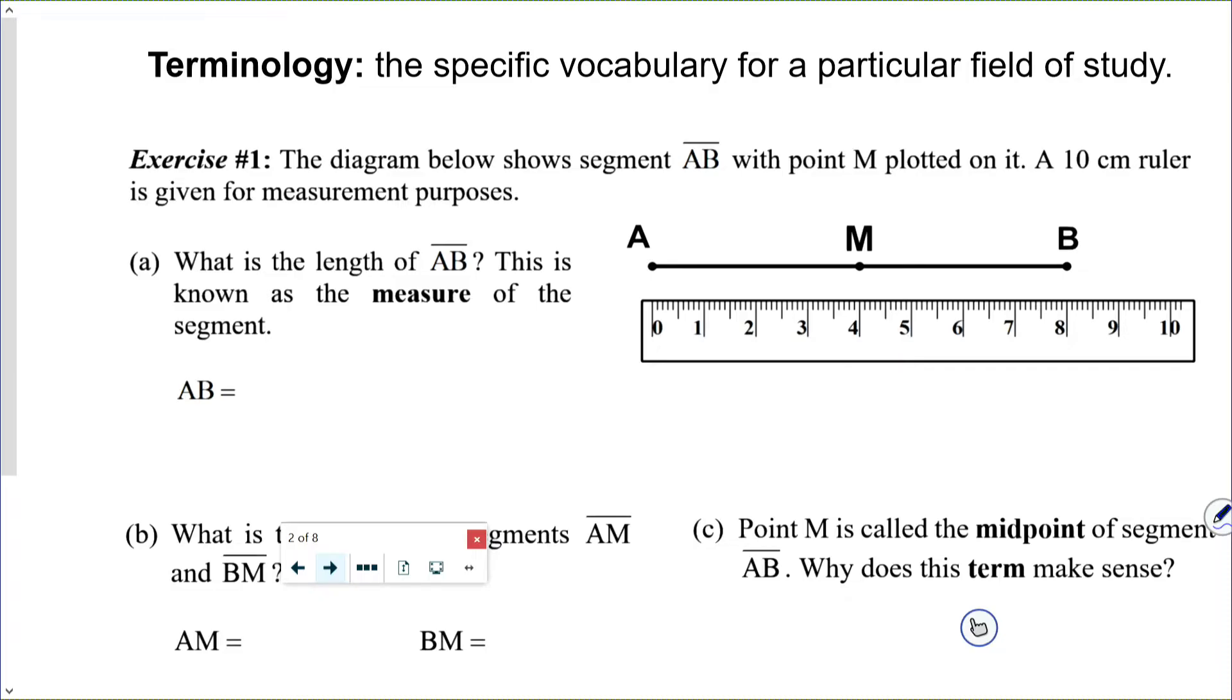Exercise number one. The diagram below shows segment AB with point M plotted on it. A 10 centimeter ruler is given for measurement purposes, primarily so you don't have to break your own out. Letter A: What is the length of AB? This is known as the measure of the segment.